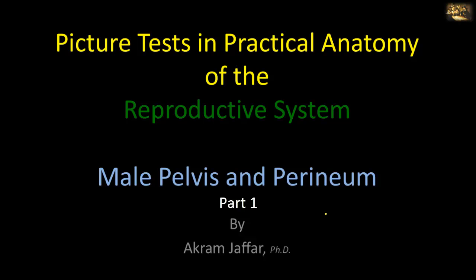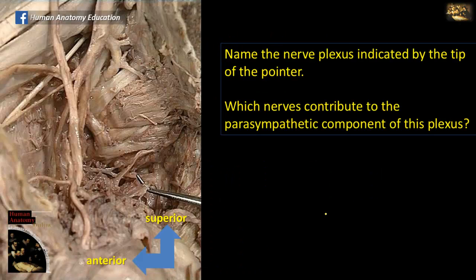I will deal with the gross anatomy of a male pelvis and a perineum. Name the nerve plexus indicated by the tip of the pointer. Which nerves contribute to the parasympathetic component of this plexus?